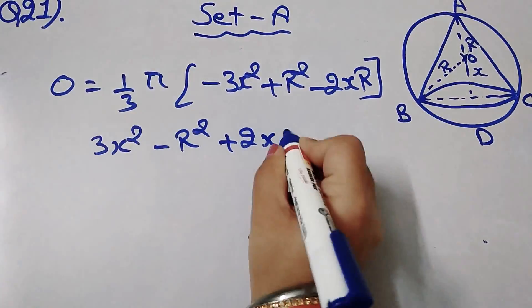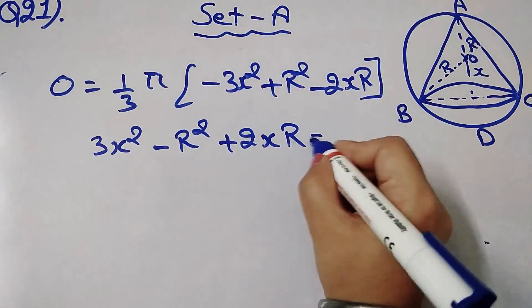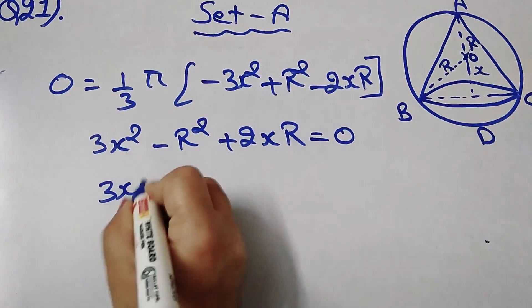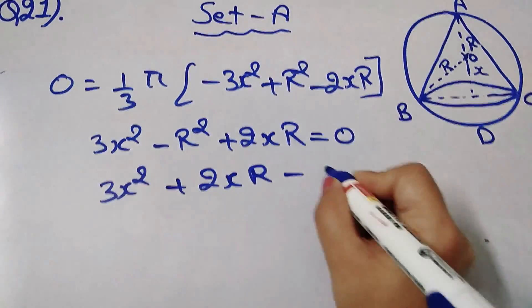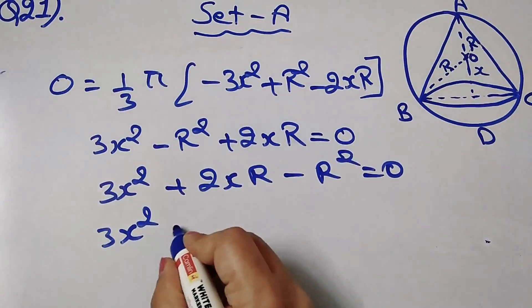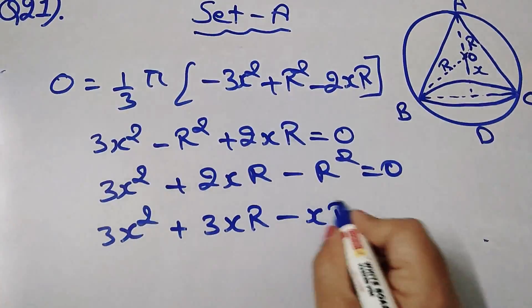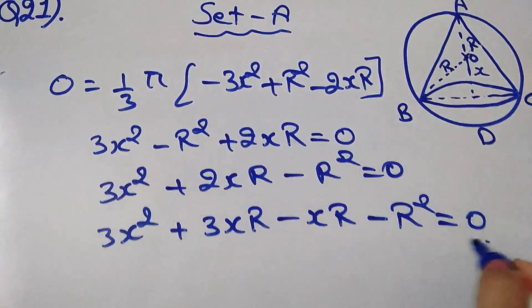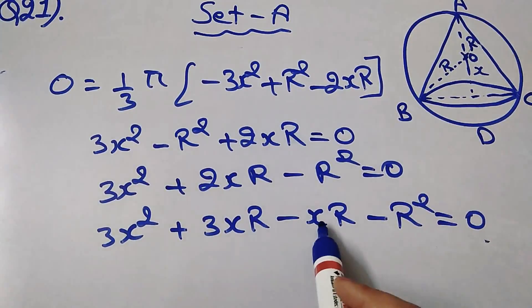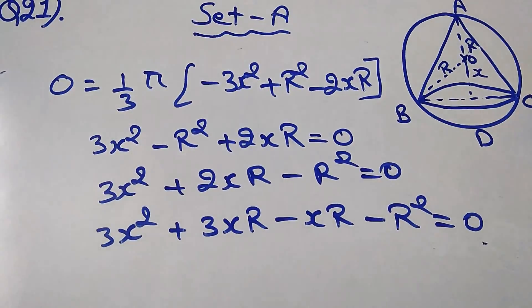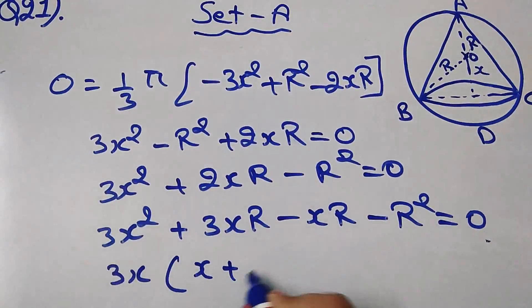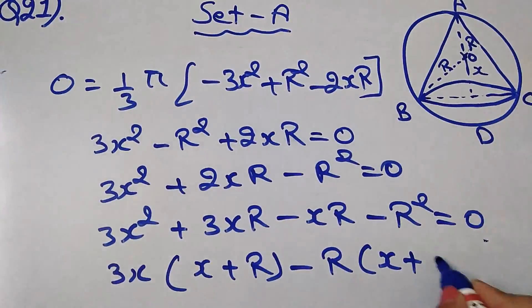Setting dV/dx = 0 gives: −3x squared + R squared − 2xR = 0, or equivalently 3x squared + 2xR − R squared = 0. Factoring: 3x squared + 3xR − xR − R squared = 0, so taking 3x common from the first two terms and −R from the last two: (3x − R)(x + R) = 0.